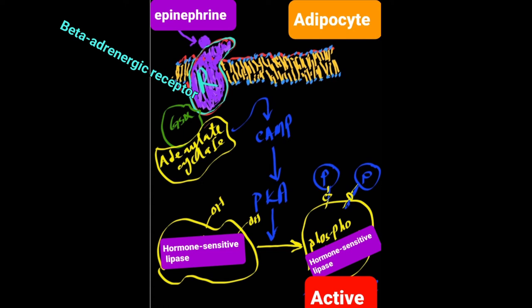This results in the activation of adenylate cyclase, resulting in the rise in cyclic AMP, resulting in activation of protein kinase A, which in turn phosphorylates hormone sensitive lipase. Hormone sensitive lipase in the phosphorylated form is the active form.